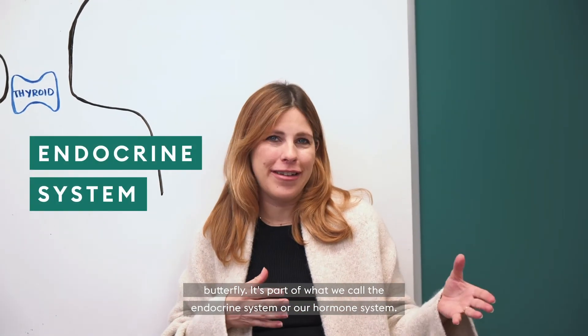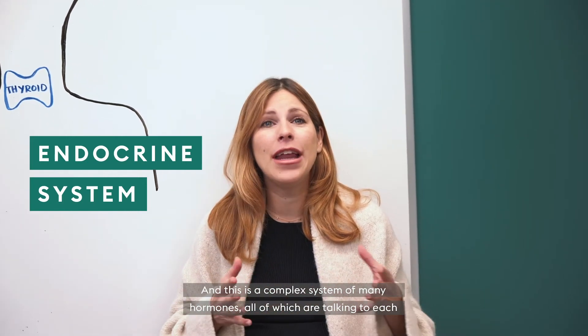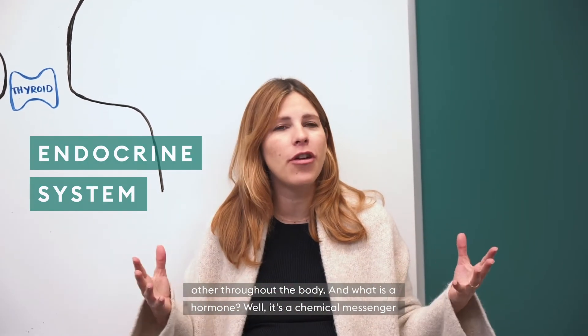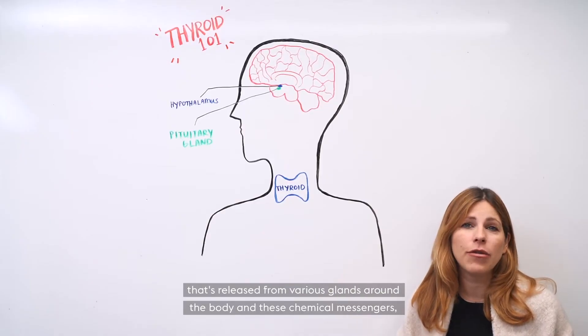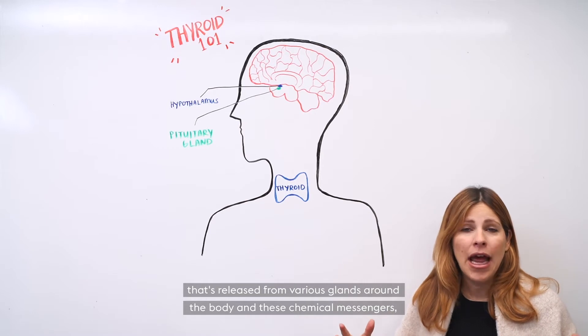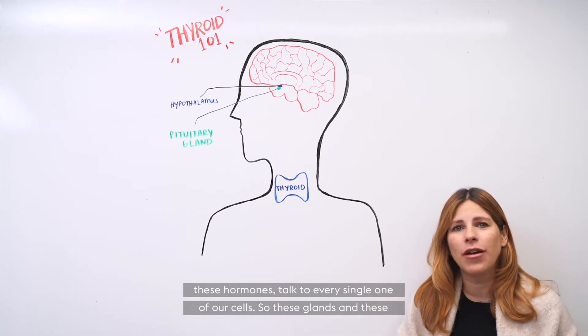It's part of what we call the endocrine system or our hormone system, and this is a complex system of many hormones all talking to each other throughout the body. And what is a hormone? Well, it's a chemical messenger that's released from various glands around the body. And these chemical messengers, these hormones, talk to every single one of our cells.